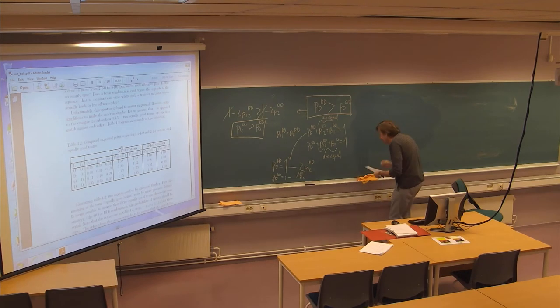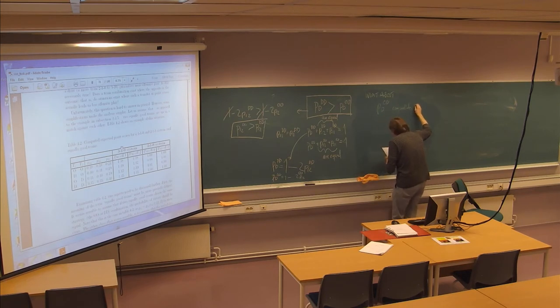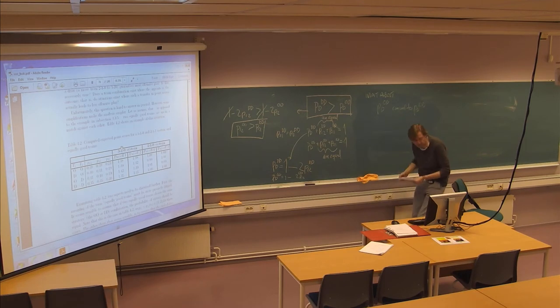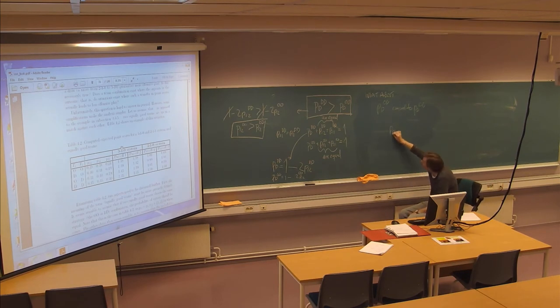And now we will make a new assumption. What about P, D, O, D compared to P, D, D, D? Again, we are looking at draw probabilities. And the question now is whether, again, in my opinion, it's reasonable that it must be like this.